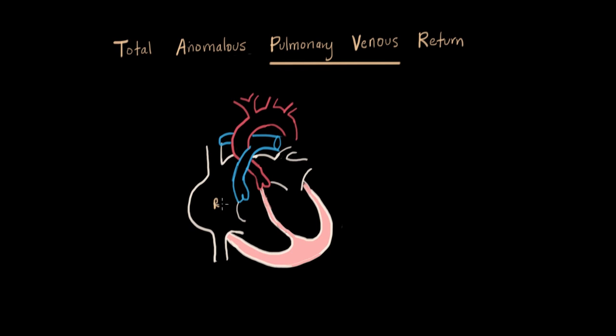We have the right atrium receiving blood from the body, going to the right ventricle, pumping into the lungs through the pulmonary arteries. And then the pulmonary veins are the things that give blood back to the atrium on the left side from the lungs. Pulmonary, meaning it comes from the lungs, and vein means it's going back to the heart instead of artery, which is away from the heart.